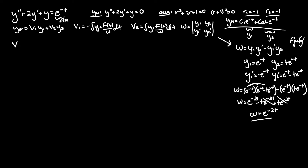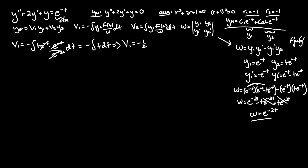Looking at v₁, that equals the negative integral of y₂·f(t) over the Wronskian: −∫ te^(-t)·e^(-t) / e^(-2t) dt. You can see that all the e terms cancel, since the numerator becomes e^(-2t) over denominator e^(-2t), leaving us with the negative integral of t dt. So v₁ = −½t².